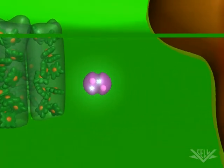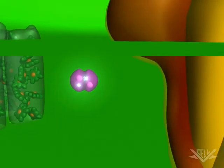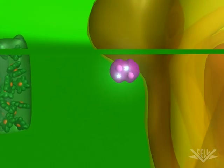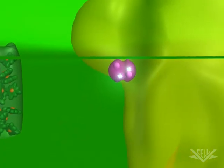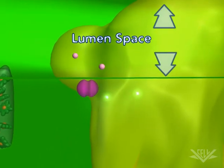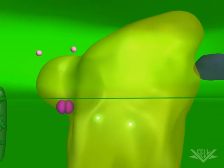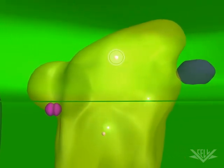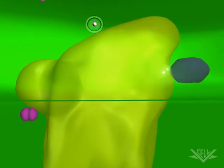Plastoquinone QB then transfers the two electrons to the cytochrome B6F complex. The two protons it picked up are released into the lumen. These transfers are coupled with the pumping of two more hydrogen ions into the lumen space by cytochrome B6F.